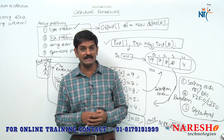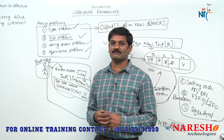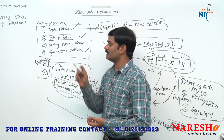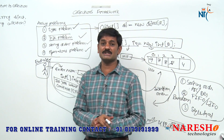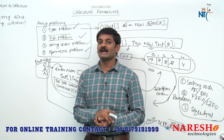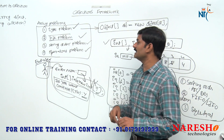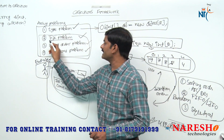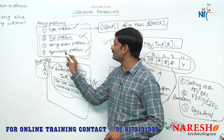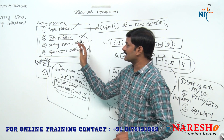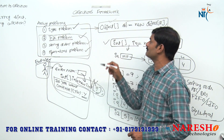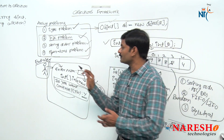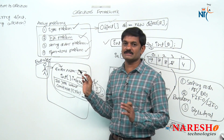To solve these problems, we choose Collection. Collection is mainly given to solve three problems: size problem, storing order problem, and operations problem. Collection is not given to solve the type problem — for type problem, we already have Object array. I hope you understand these four points and differences.